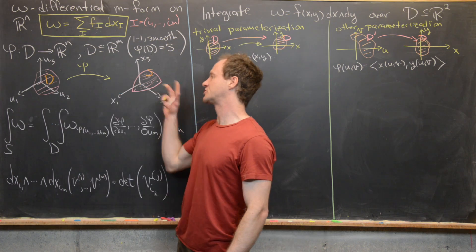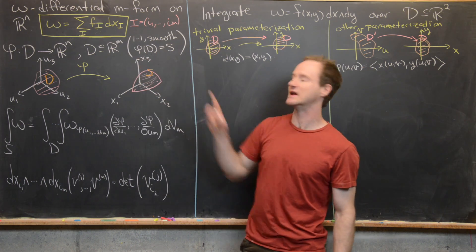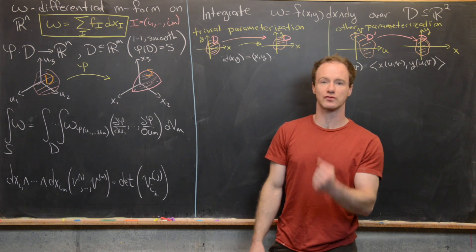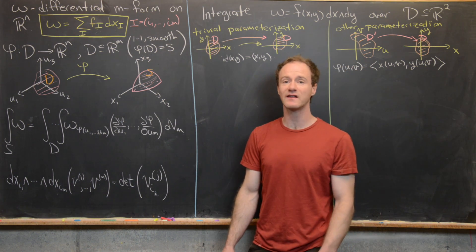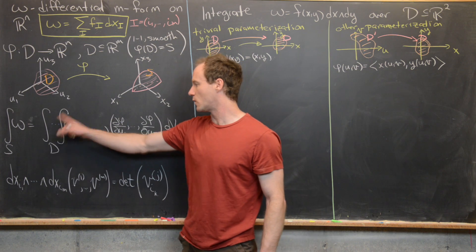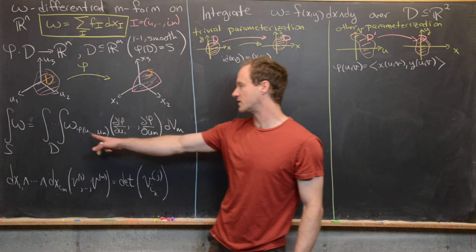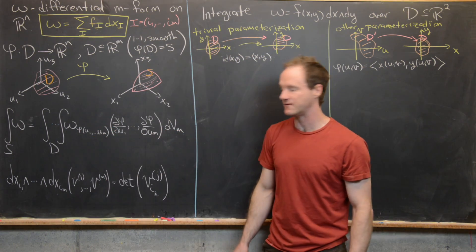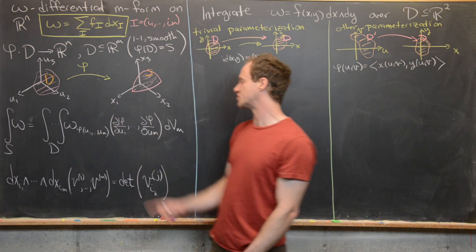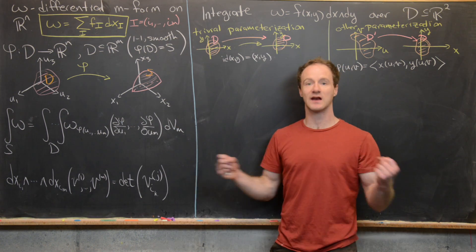The picture we have: over here is our Rm space, and over here is our Rn space. Phi takes this region D and folds it into this M-dimensional region in a higher dimensional space. We argued that the integral of this differential M-form over S should be this M-fold integral over D of omega, first evaluated on the hypersurface defined by phi, and then at all of the tangent vectors to the hypersurface. This is just the standard M-volume differential element for that multi-integral.